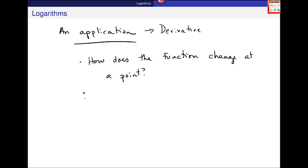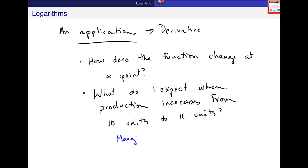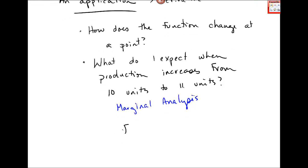We've also looked at using the derivative as an approximation for a one unit difference. So what do I expect, for example, when production increases from 10 units to 11 units? And we've looked at why the derivative, this is an application of marginal analysis, that I really don't have to compute these two values, but that the derivative, let's say f'(x), approximates this difference when the difference is 1.